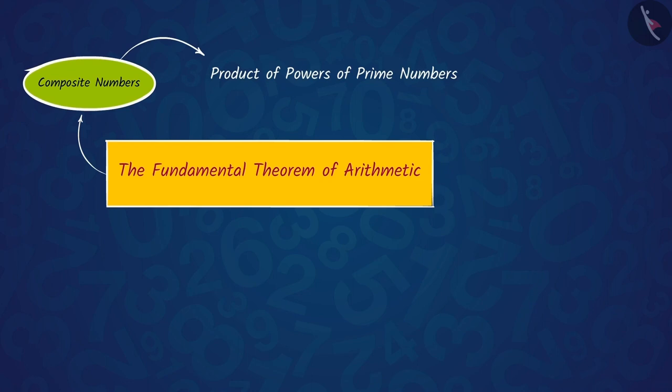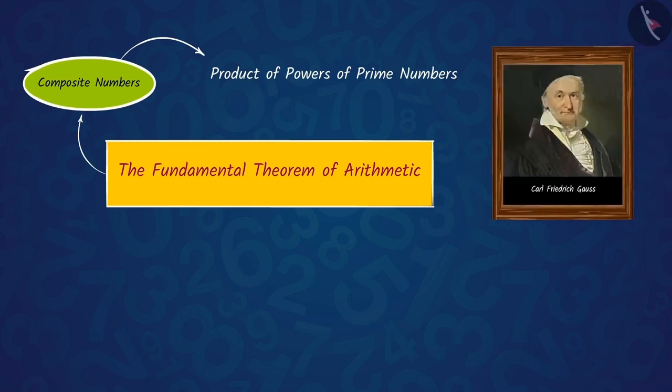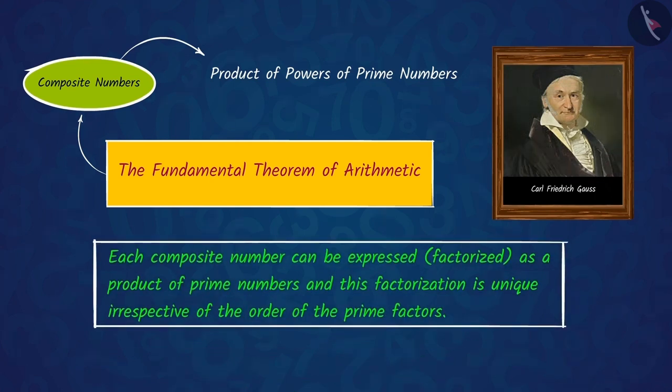It was introduced by Sir Karl Friedrich Gauss. According to him, each composite number can be expressed or factorized as a product of prime numbers, and this factorization is unique irrespective of the order of the prime factors.